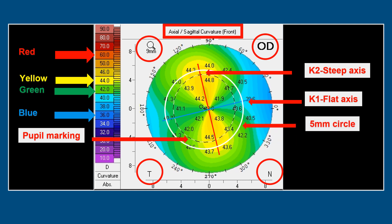There is also a 5 mm circle on the map, which is important. When interpreting the topography map, we compare the superior and inferior values at the 5 mm circle. For example, the superior value here is 44 diopters and inferiorly it is 43.7 diopters. This 5 mm circle is important for the interpretation of the topography map.